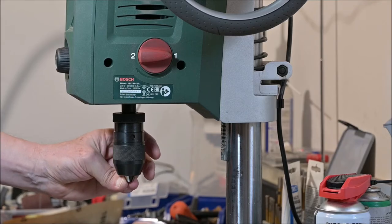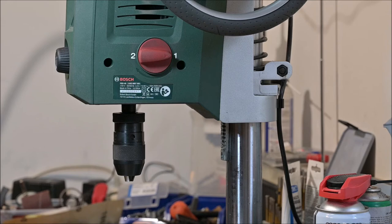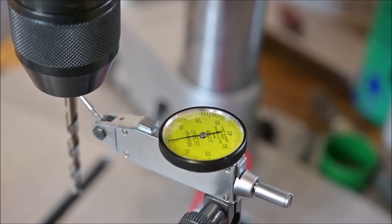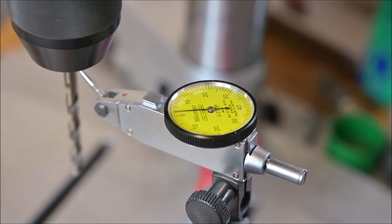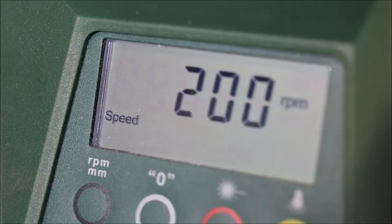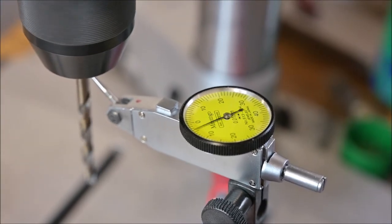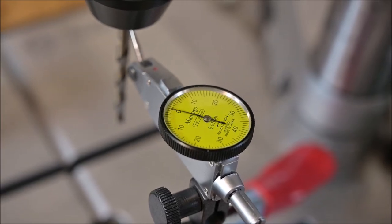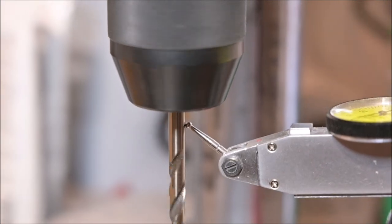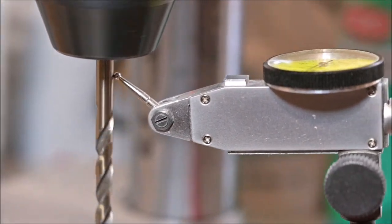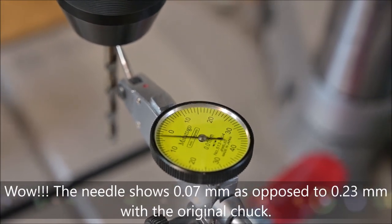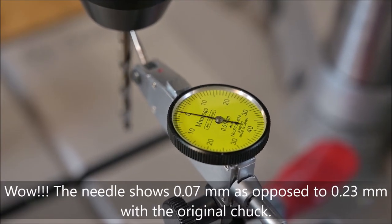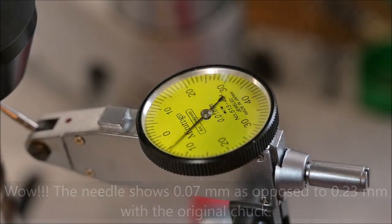It feels much better than the old one, but of course I want to measure it also so I can really see if there is a measurable difference. Same drill and the same speed, of course. Wow! Yes, there is a huge difference. I can see it on the chuck. There is no wobbling or anything. Physical and measurable. It is about one-third of what I have measured before with the original chuck.